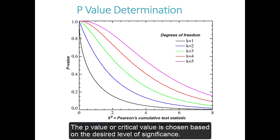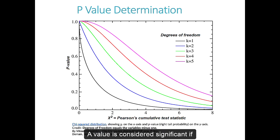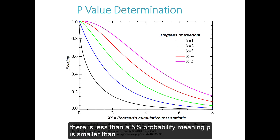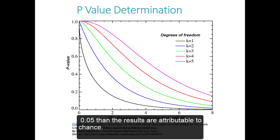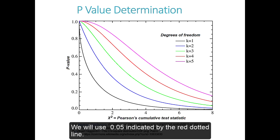The p-value or critical value is chosen based on the desired level of significance. A value is considered significant if there is less than a 5% probability meaning p is smaller than 0.05 then the results are attributable to chance. We will use 0.05 indicated by the red dotted line.